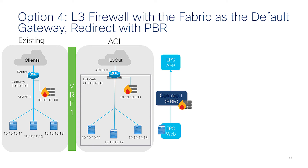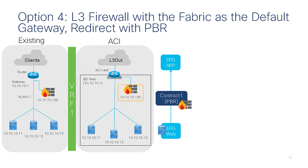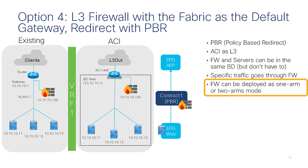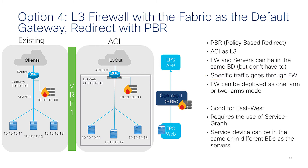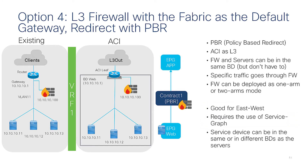Option four is a layer three firewall with the fabric as default gateway using service graph redirect. Here you need only one VRF. The firewall can be on the same BD as the servers, but it doesn't have to. The firewall can be in one-arm or two-arm mode, and you can send just specific traffic to the firewall. ACI does the routing, and this is excellent for east-west traffic. A service graph is required.